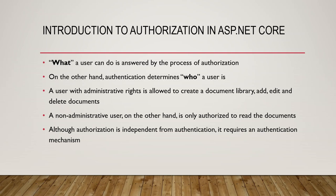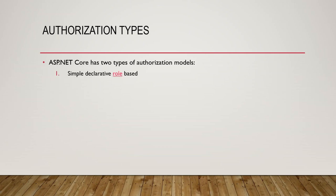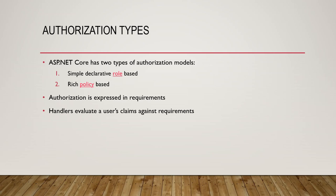ASP.NET Core has two types of authorization models. The first is simple declarative role-based authorization, and the second is rich policy-based authorization. Authorization is expressed in requirements, and handlers evaluate a user's claims against those requirements.